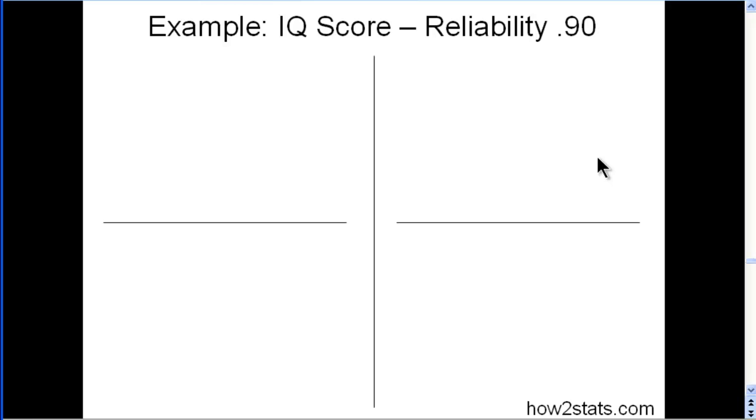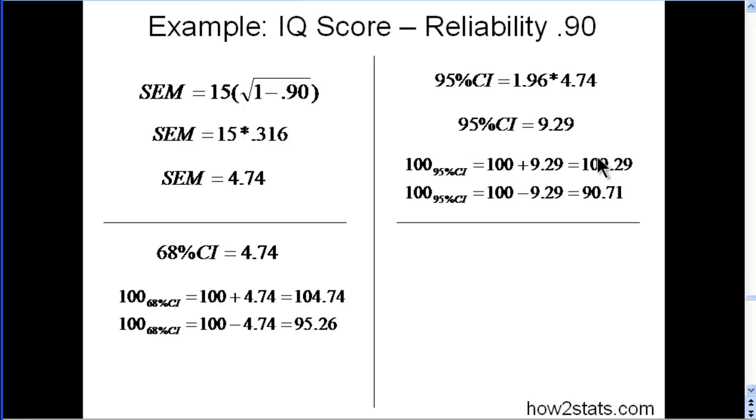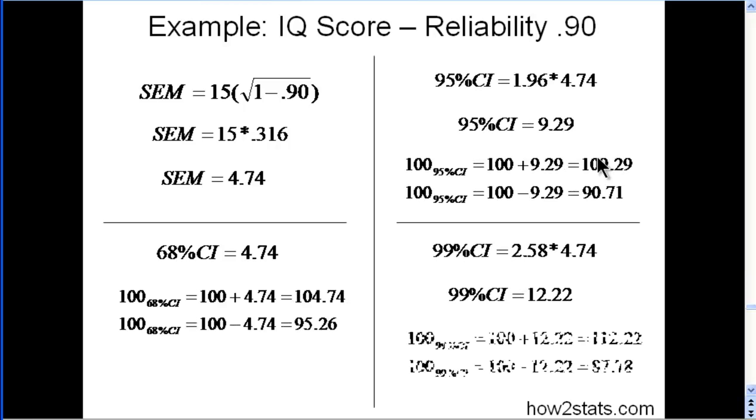Now let's look at reliability 0.90. So these are the calculations. I'm just going to blitz through them. You can pause and look at the calculations if you wish. Now with 99% confidence, someone scores 100 on a test that has reliability of 0.90, we end up with confidence interval between 87 and 112. So still a pretty big gap. You really need reliability of 0.95 to really get a tight 95% confidence interval around a score.